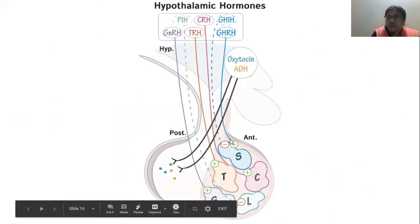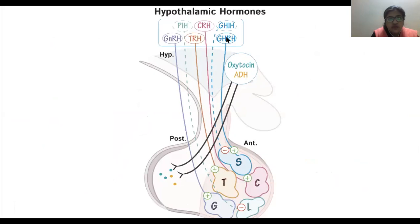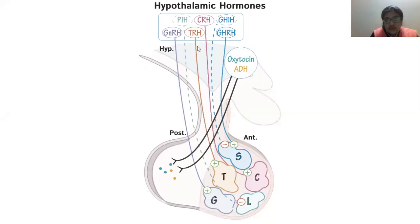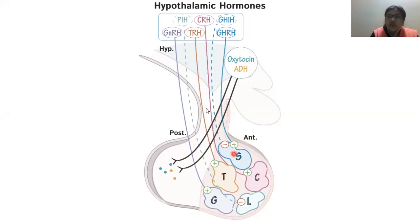On the pituitary somatotroph, GHRH binds to its receptor and stimulates growth hormone release. There is also another hormone, GHIH — growth hormone inhibiting hormone — which produces a negative effect and inhibits growth hormone release.